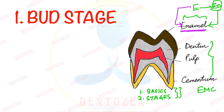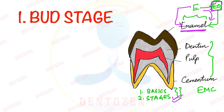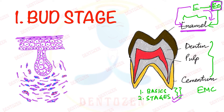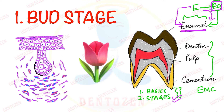But in this entire journey, this whole process which is happening, the enamel organ will undergo changes in its shape. Its shape changes based on which we give the different morphological stages of tooth development. So in this video we are going to discuss the first stage of tooth development — that is bud stage. Now in this stage, the enamel organ looks like a bud. That's why it is called bud stage.